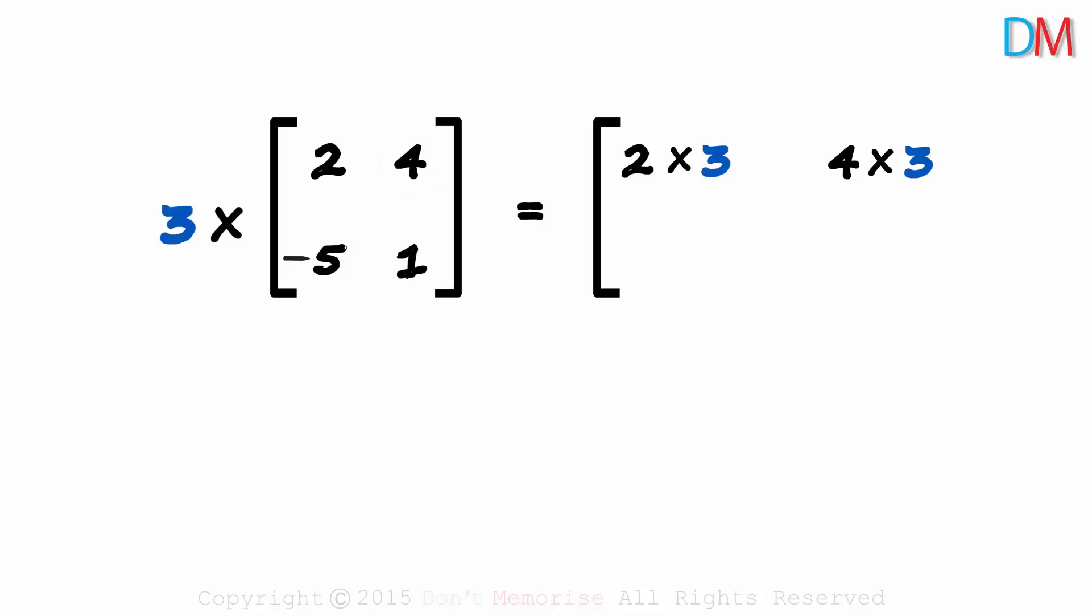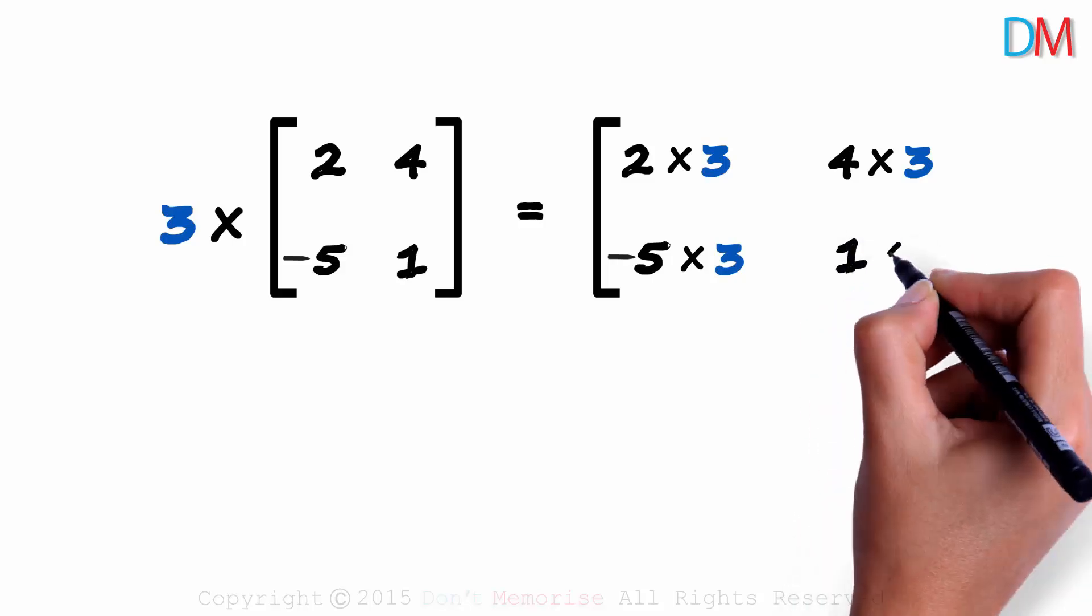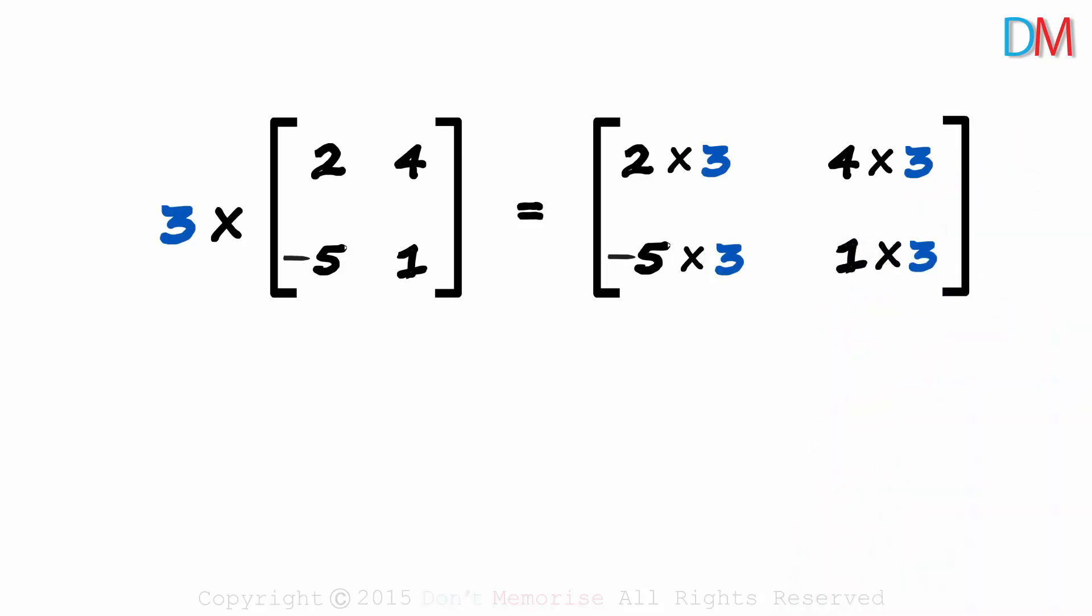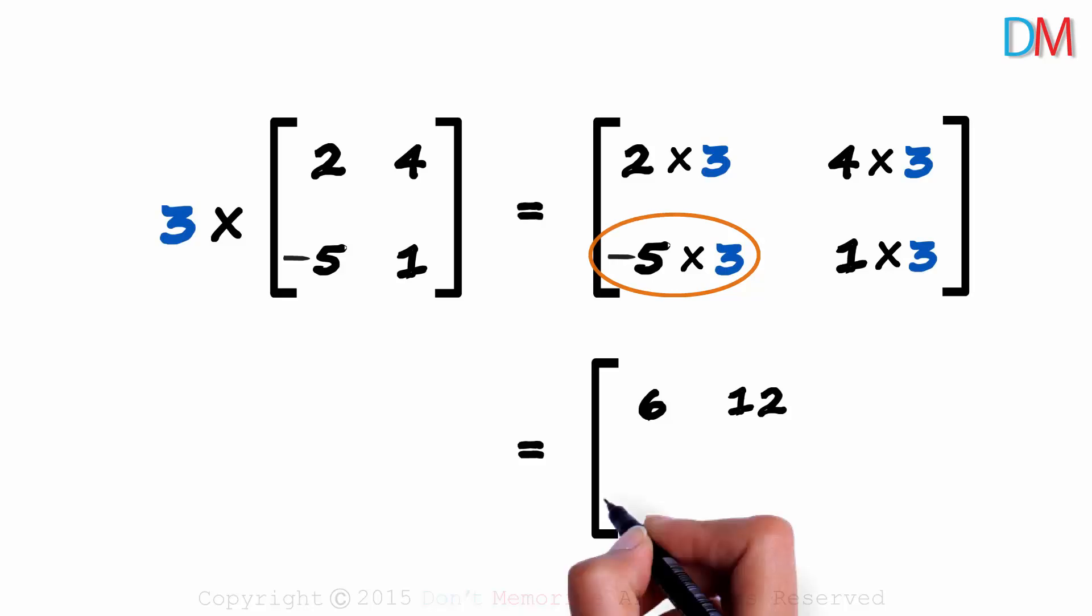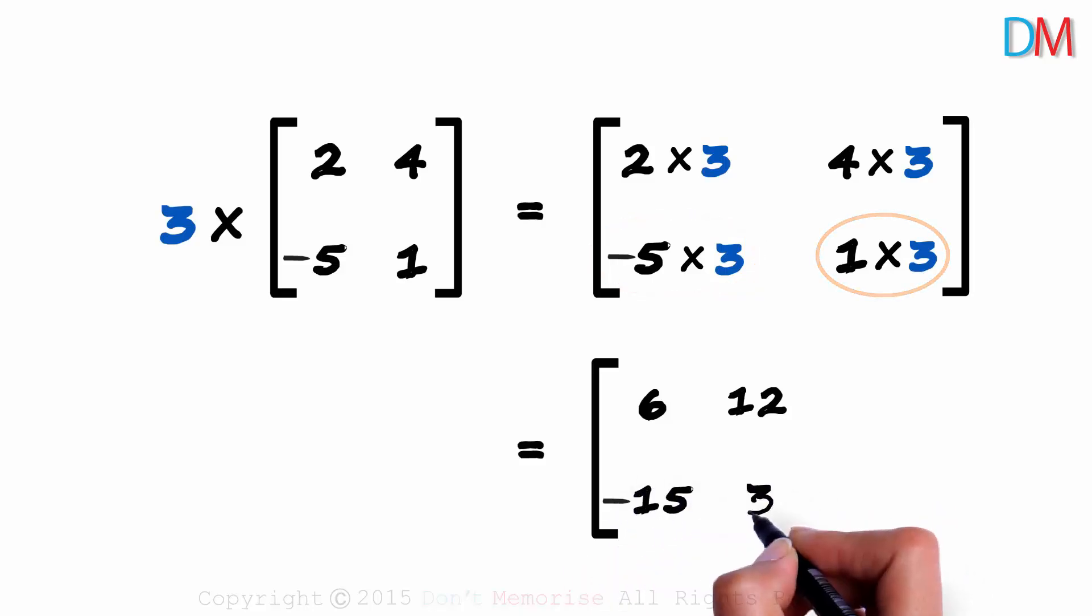Now I want you to pause the video and find the elements in these two positions. We will have minus 5 multiplied by 3 here and 1 multiplied by 3 here. Finding each element is easy now. 2 times 3 is 6, 4 times 3 is 12, minus 5 times 3 is minus 15, and 1 multiplied by 3 is 3. This is the answer. 3 times this matrix gives us this matrix.